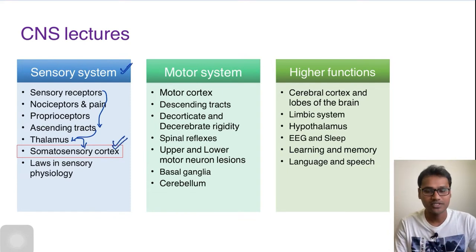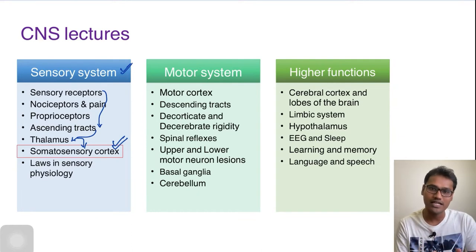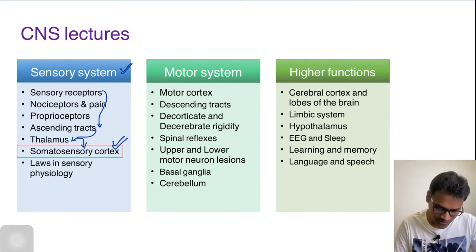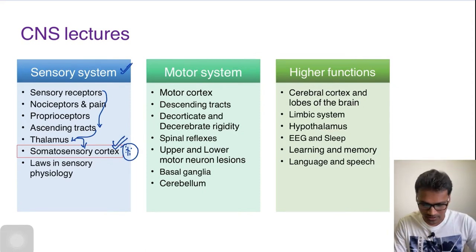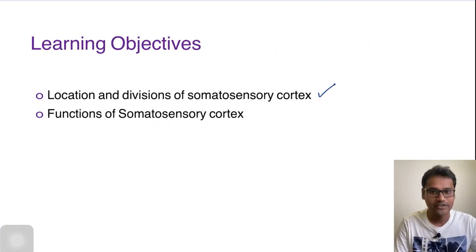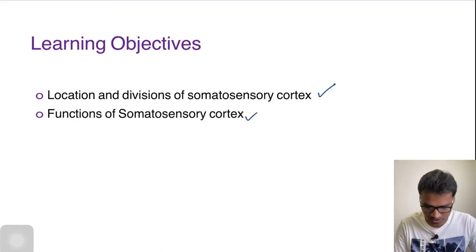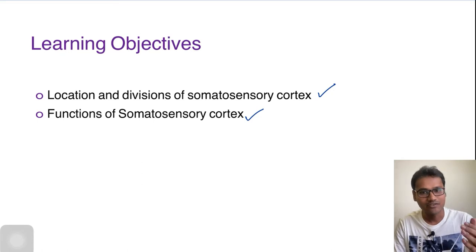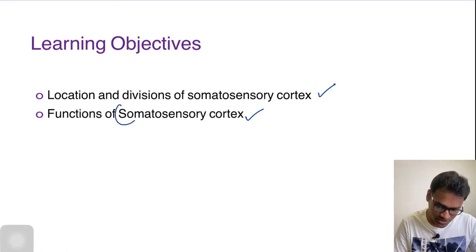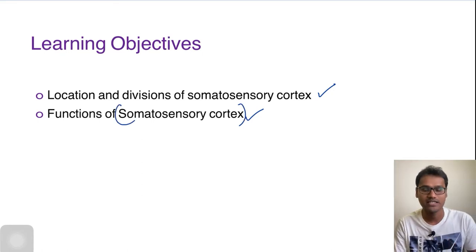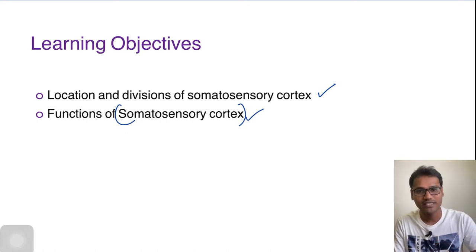What is the purpose of somatosensory cortex? Even though the sensations are carried from different parts of the body, they are processed and finally understood by the somatosensory cortex. Today we will be learning about the location and divisions of somatosensory cortex and the functions of somatosensory cortex. We will also be discussing what happens whenever these somatosensory cortex areas are damaged — basically their function is going to get lost and they will present with some kind of disorders.